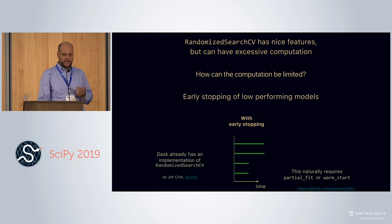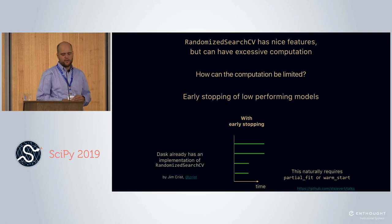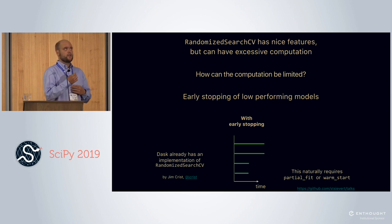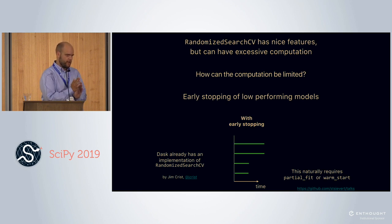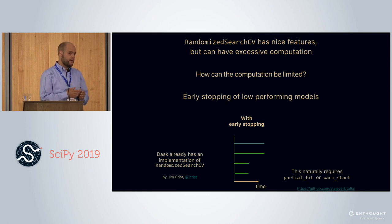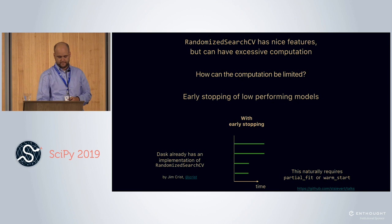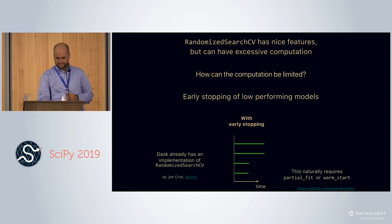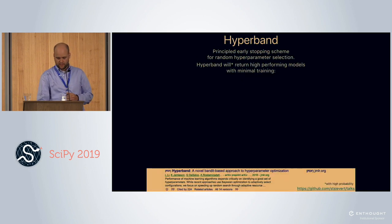I should mention that DaskML already has some limits on computation through its implementation of RandomizedSearchCV, which mirrors the scikit-learn API but uses some fancy things to limit computation in certain special cases, typically involving pipelines and natural language processing. This is work thanks to Jim Crist.